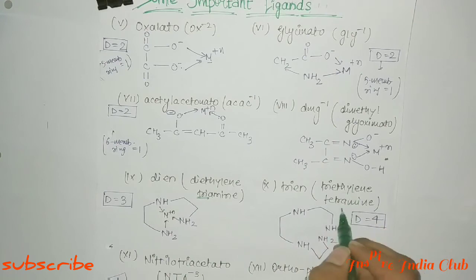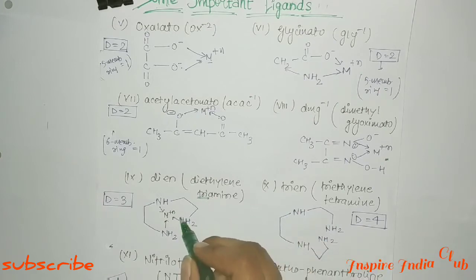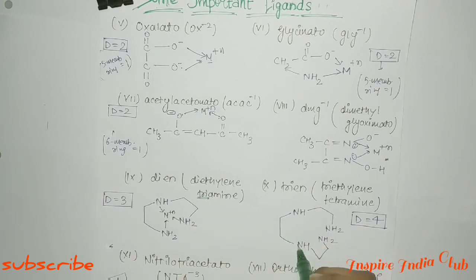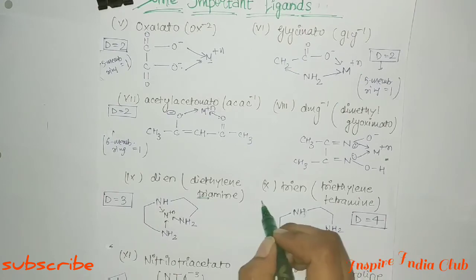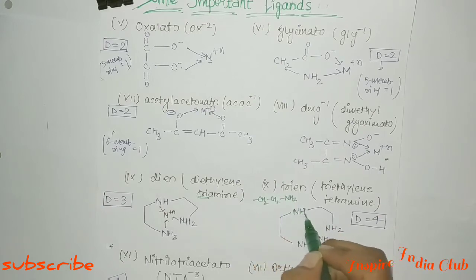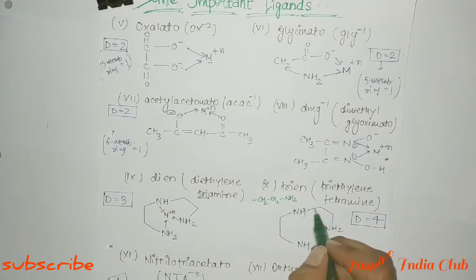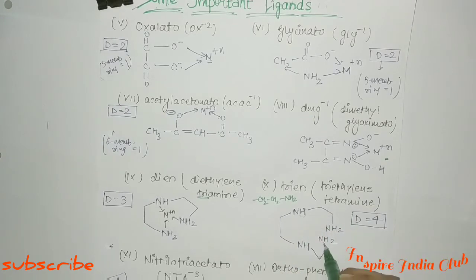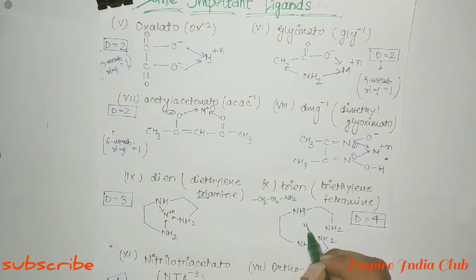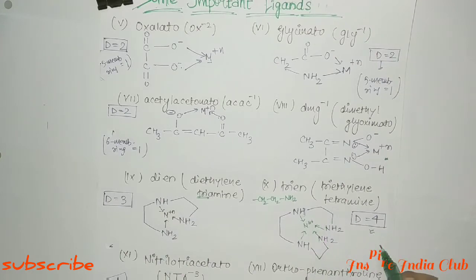Next is triethylene tetramine, abbreviated 'trien'. Starting from diethylene triamine, you replace one more nitrogen's hydrogen with another -CH2-CH2-NH2 group, giving 4 nitrogen atoms. All 4 nitrogen atoms have lone pairs and donate them to the complex forming metal, so denticity is 4.